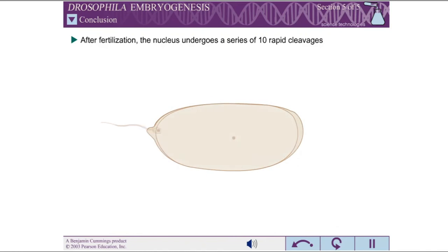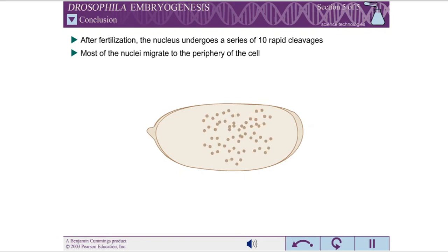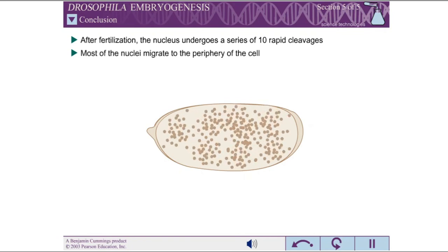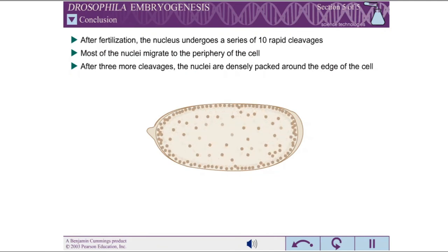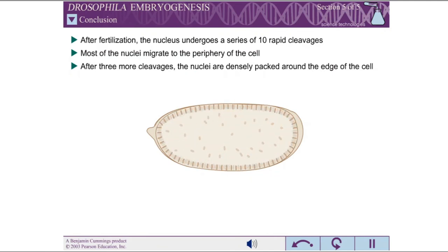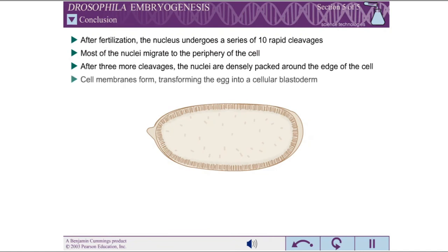After fertilization, the haploid sperm and egg nuclei fuse to form a diploid zygotic nucleus. This nucleus undergoes a series of 10 rapid cleavages, during which most of the nuclei migrate to the periphery of the cell. The nuclei then undergo another three rounds of cleavage, leading to about 6,000 densely packed column-shaped nuclei enclosing the central yolk. Cell membranes then form around the nuclei, transforming the egg into a cellular blastoderm.